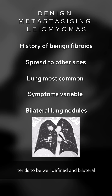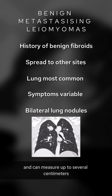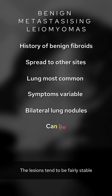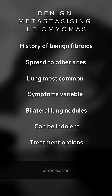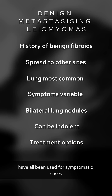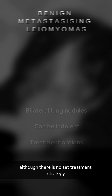Lung nodules tend to be well-defined and bilateral, and can measure up to several centimeters with normal background lung. The lesions tend to be fairly stable and can even regress on their own with hormonal changes. Hormonal manipulation, embolization, and surgery have all been used for symptomatic cases, although there is no set treatment strategy.